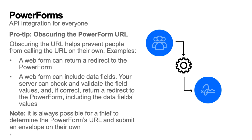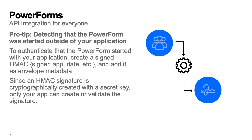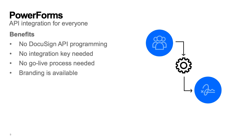The solution is to cryptographically sign the URL. Here's a pro tip: detecting that the Power Form was started outside of your application. To authenticate that the Power Form started with your application, create a signed HMAC signer app date, etc., and add it as envelope metadata. Since an HMAC signature is cryptographically created with a secret key, only your app can create or validate the signature.